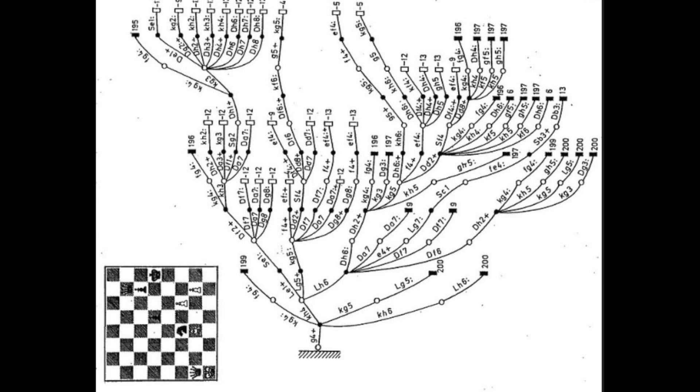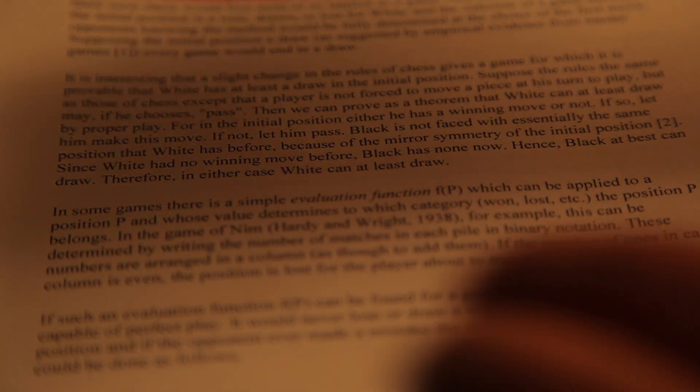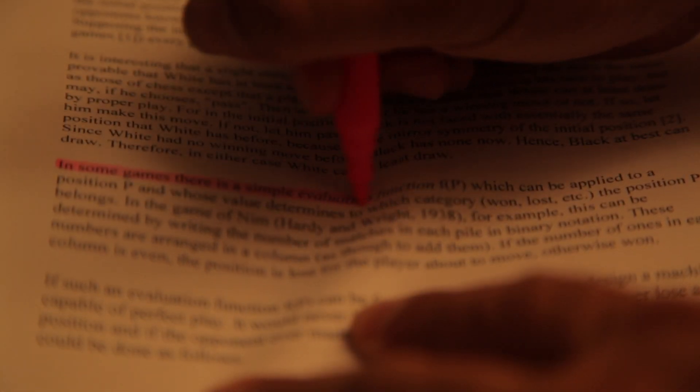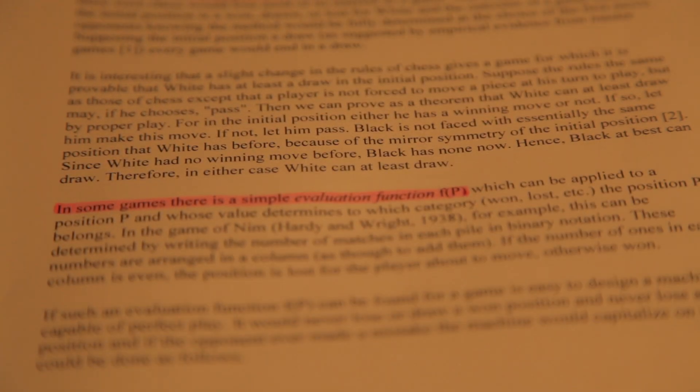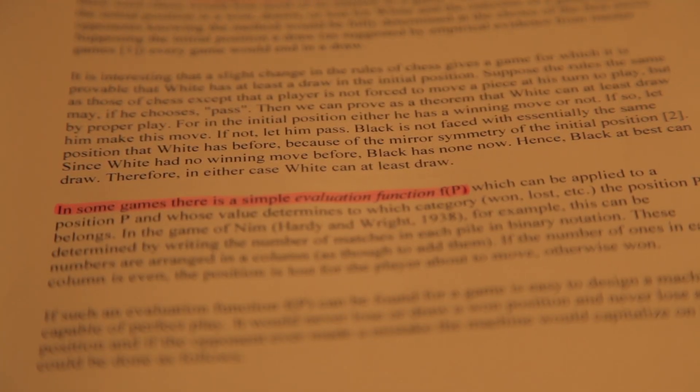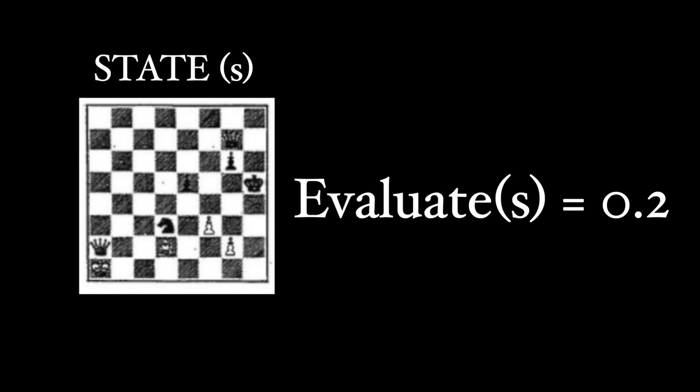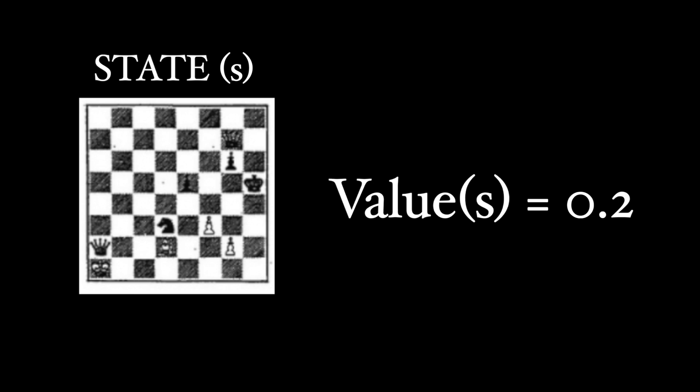So instead he imagined a way to predict the future of a game before taking any moves. His key idea was to define an evaluation function which could tell you, given any board state, a score from minus one to plus one, how likely it leads to a win versus a loss. This evaluation function became better known as a value function. You provide your state, it tells you the quality of that state.